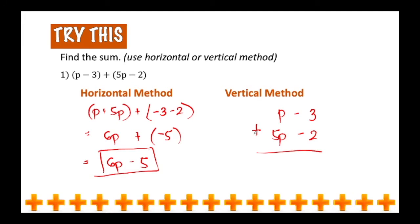Let me do this from left to right. t plus 5t will give us 6t, and negative 3 plus negative 2 will give us negative 5. Using this method, we arrive at the same answer. So it doesn't matter which of the two methods you use, because it would give you the same answer. You just have to decide which one you prefer the most.